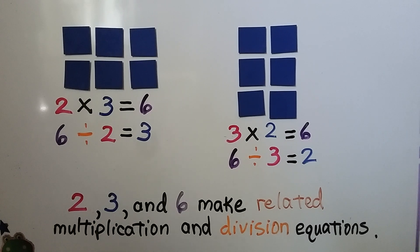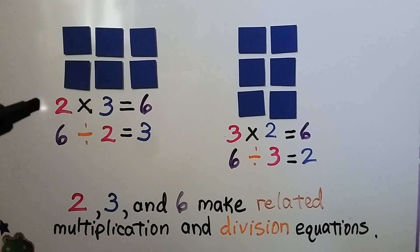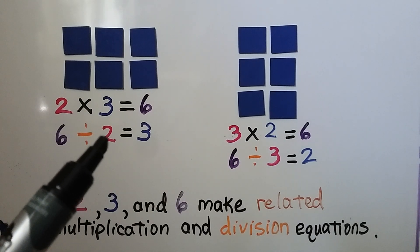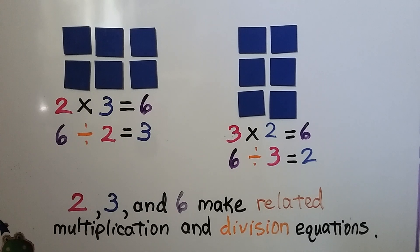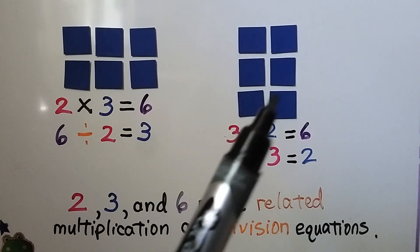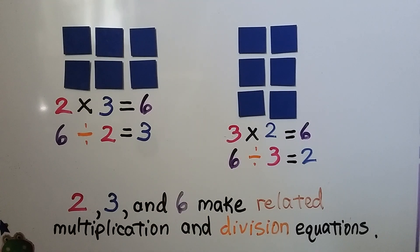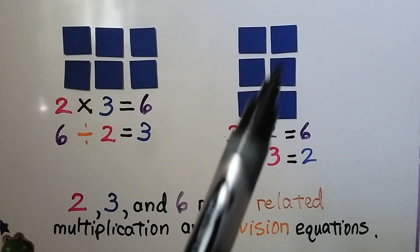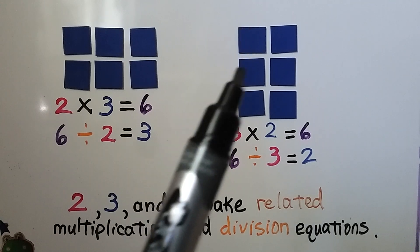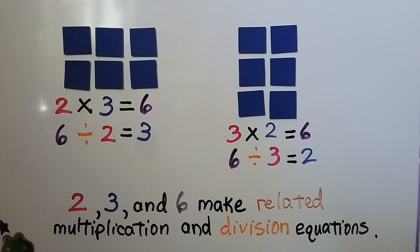In this first array, we have 2 rows with 3 in each row. That's 2 times 3. There's 6 in all. 2 times 3 is equal to 6. We have 6 in all divided into 2 rows with 3 in each row — 6 divided by 2 is equal to 3. If we turn the array on its side, we have 3 rows with 2 in each row, which is equal to 6. And we have 6 in all divided into 3 rows, which is equal to 2 in each row. 6 divided by 3 is equal to 2.